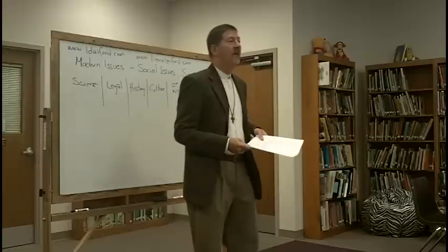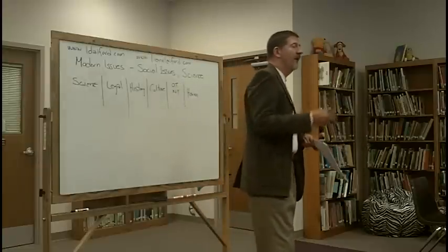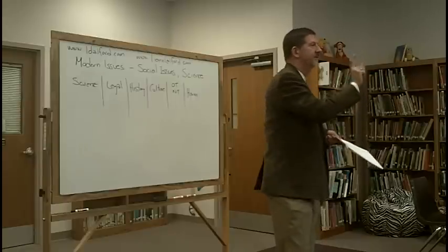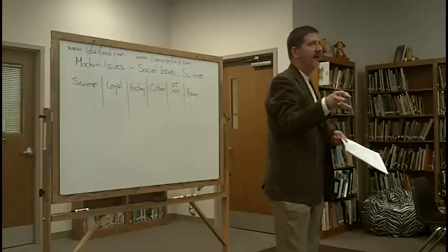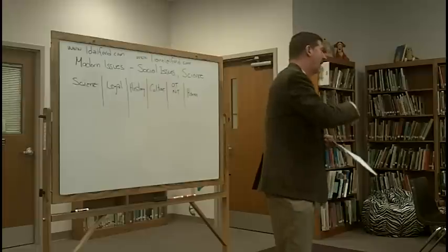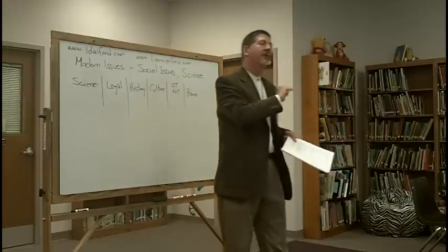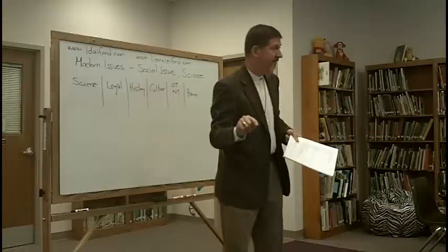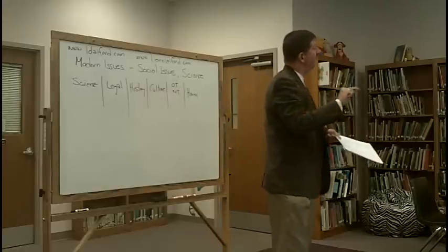But in this class, what we've been looking at is modern issues. We've been trying to do three things. Number one, the tools to know truth: scientific method, legal, historical method, and logic. And then apply them to problems, apply them to issues to prove, to know what we can prove. Because if you know we can't prove everything, there are things that we can prove.